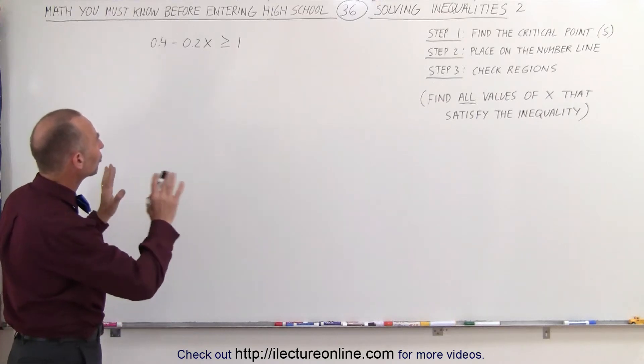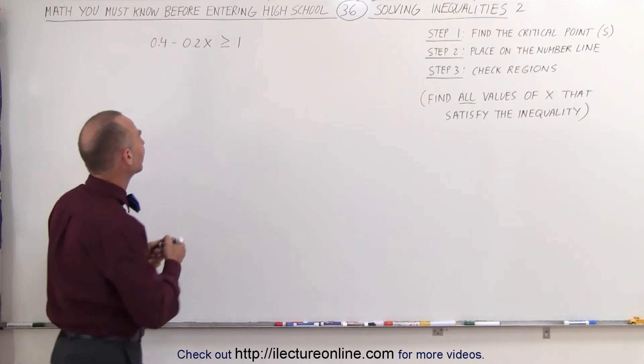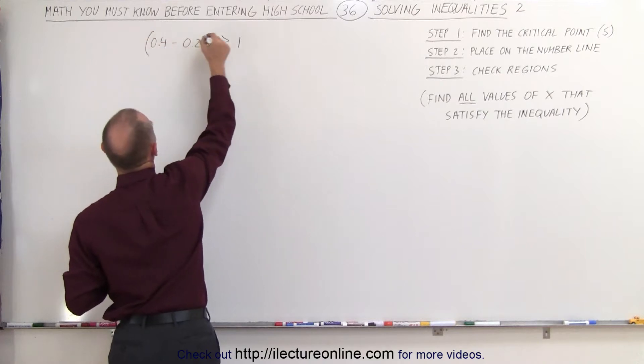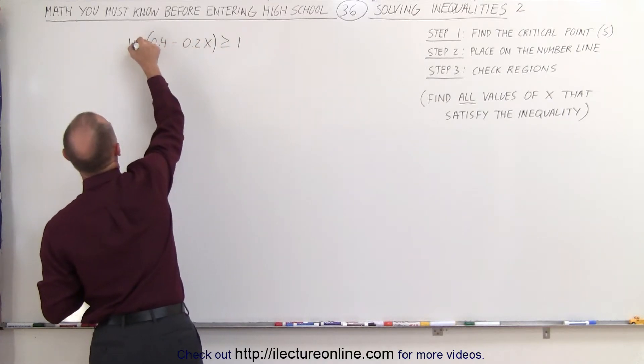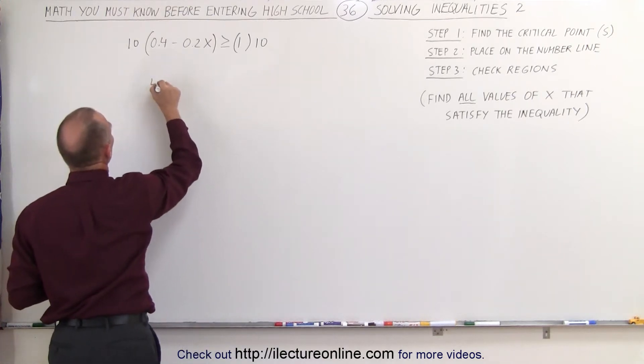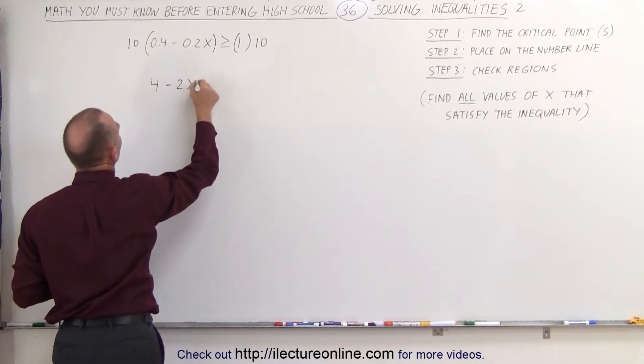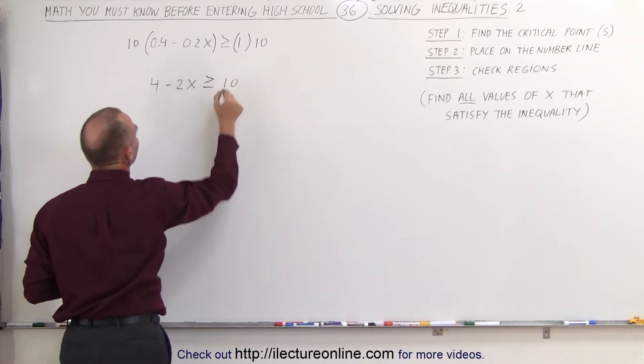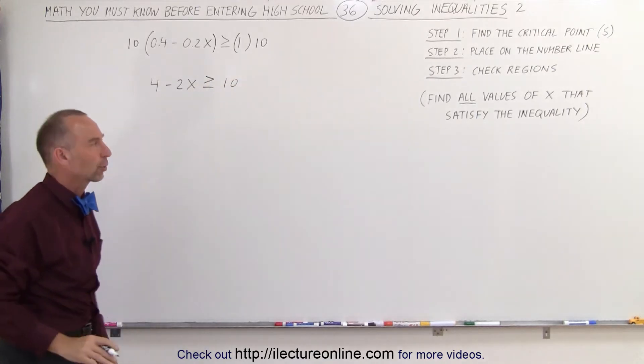What we're going to do is multiply both sides of the inequality sign by 10. We're going to multiply the left side by 10, and we're going to multiply the right side by 10, which means that on the left side we end up with 4 minus 2x is greater than or equal to 10. Now, it's a lot nicer to work with.